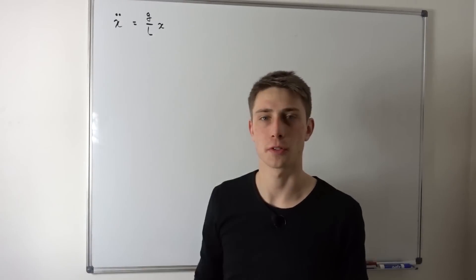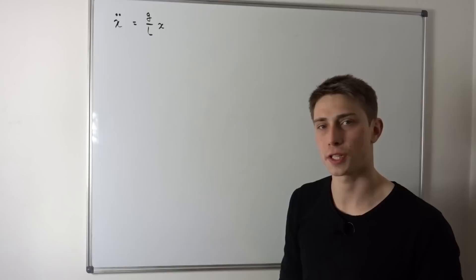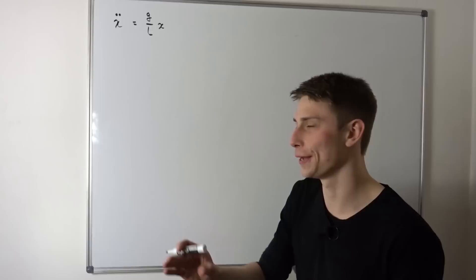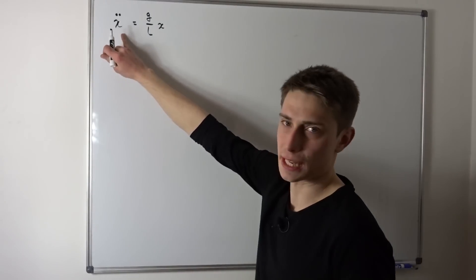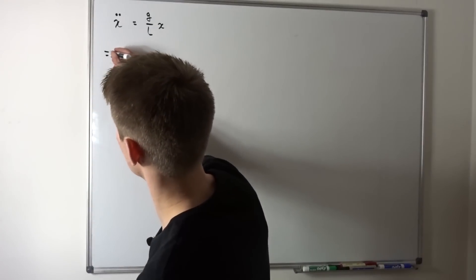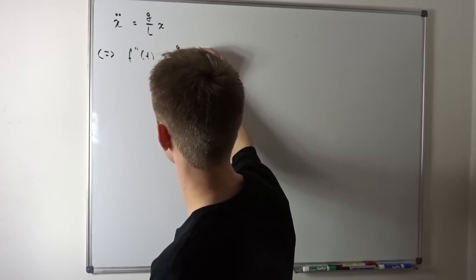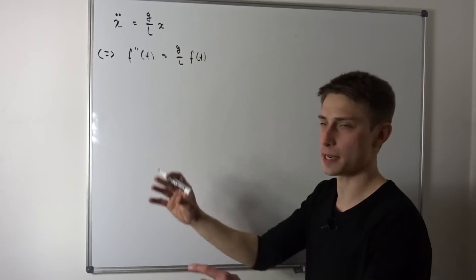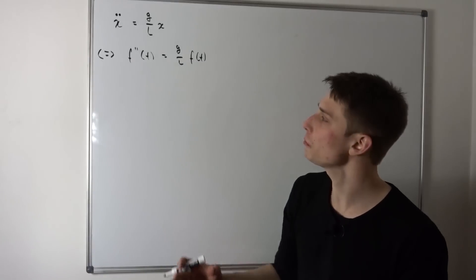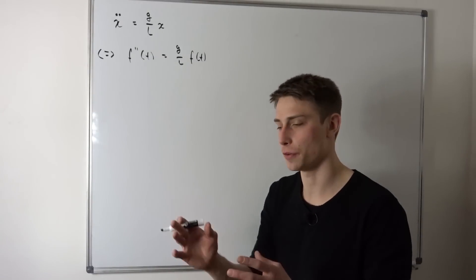If you don't know where this formula comes from, take a look in the description — there will be a link to the corresponding video. So before starting off we want to transform this into Laplace transform form. We'll start by defining this as the second derivative of some time-dependent function. So that's equivalent to the statement f''(t) = (g/l) · f(t). That's the same statement, just to bring some convention to this whole thing and make it clear for every step where it comes from.